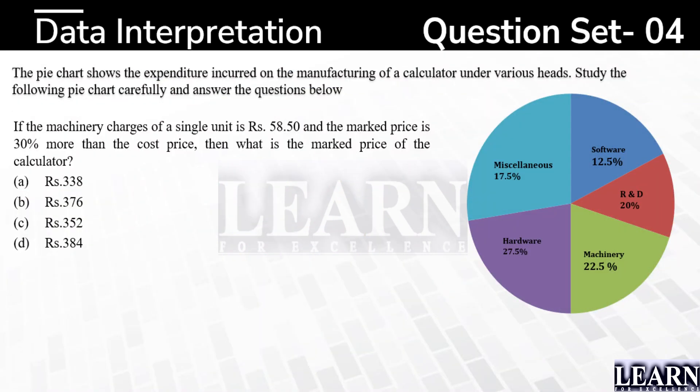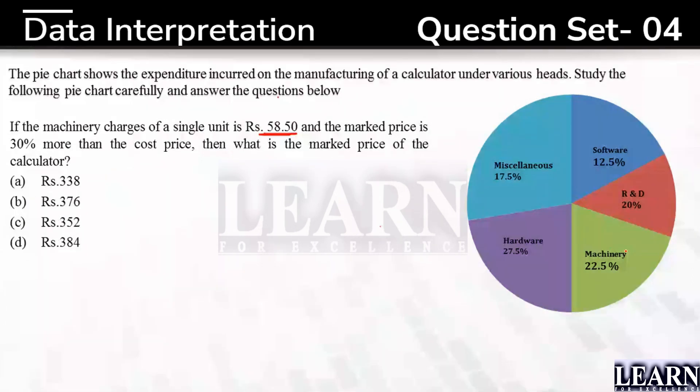Let's move on with the next question. If the machinery charges of a single unit is Rs. 58.5, machinery charges 22.5%, that 22.5% is going to be Rs. 58.5. And they told the market price is 30% more than the cost price. Cost price is 100%. They're asking what is the marked price of the calculator? Here we need to find out the answer.